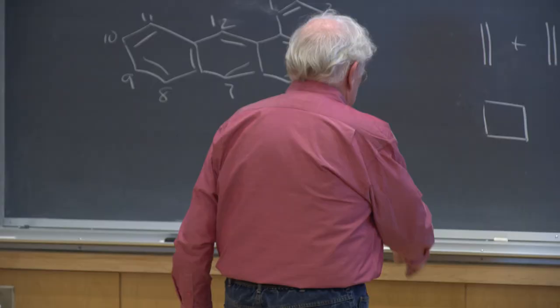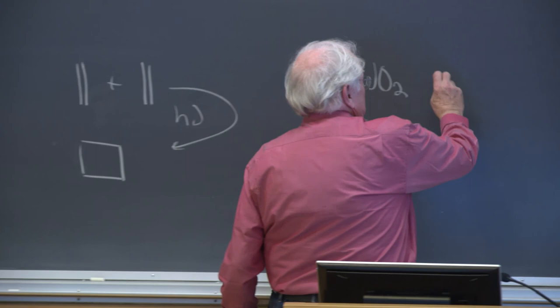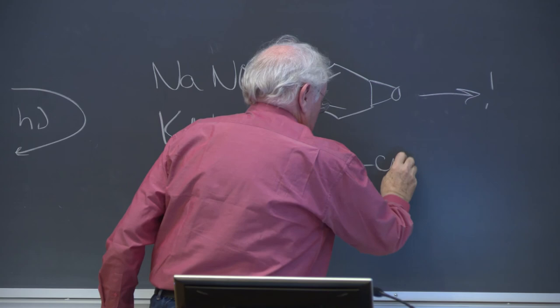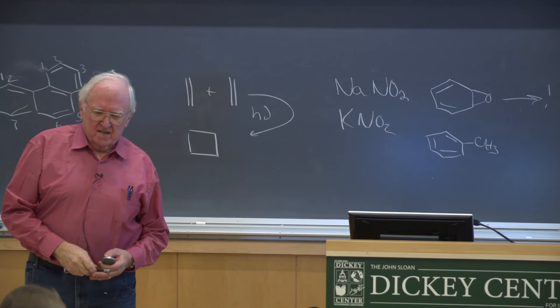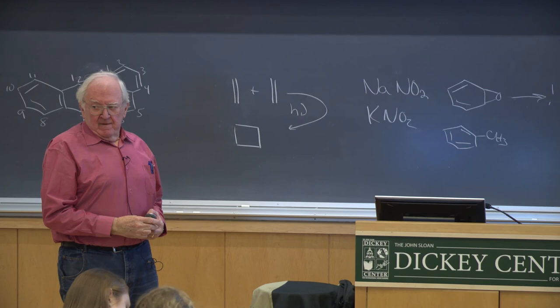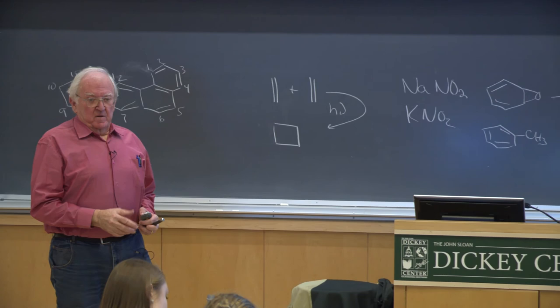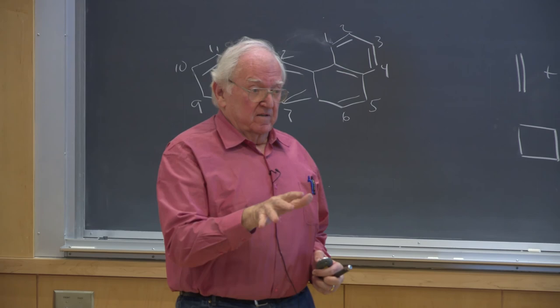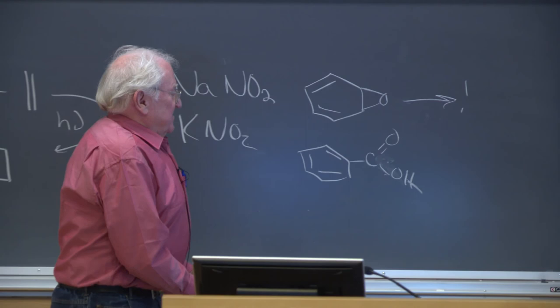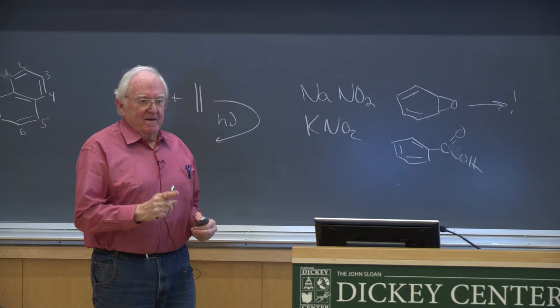Does anybody know why benzene causes leukemia but methylbenzene and xylene don't? Benzene is oxidized to an epoxide. But with toluene or xylene, the benzylic methyl is very susceptible to oxidation — potassium permanganate converts it to benzoic acid, and with xylene you get the diacid. That's not a carcinogen. So you don't perturb the benzene ring unless it's benzene itself. Benzene is found everywhere — it's been found on the moon, and is the major organic compound from some volcanoes.